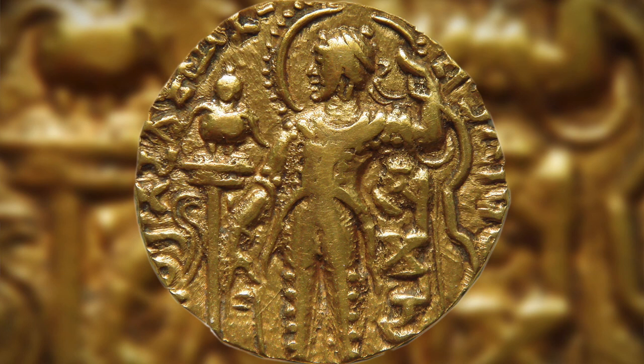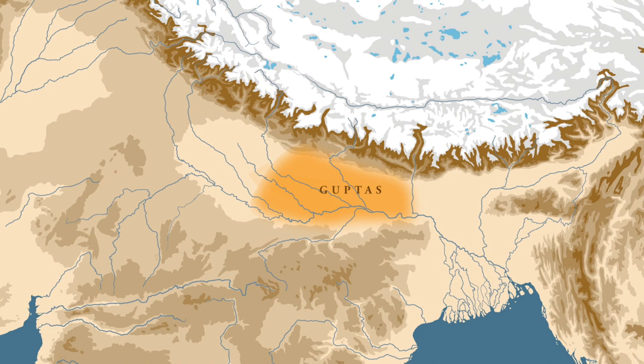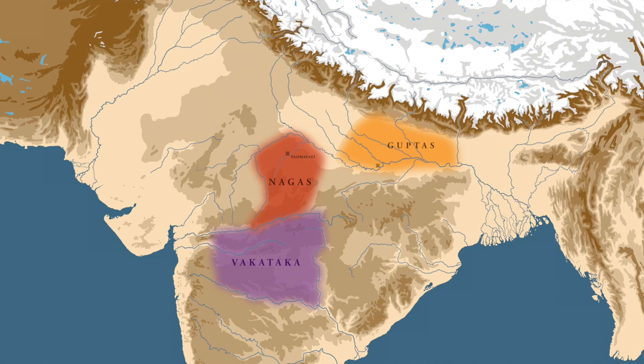The Guptas had two options: they could either advance east and conquer the lower Ganga Valley, or campaign west and conquer the upper Ganga Valley. Both regions presented different challenges. However, the political situation of the period provided a solution. During this time, the alliance between the Vakatakas and the Nagas, which had existed during the reign of Samudragupta's father Chandragupta, was beginning to disintegrate.